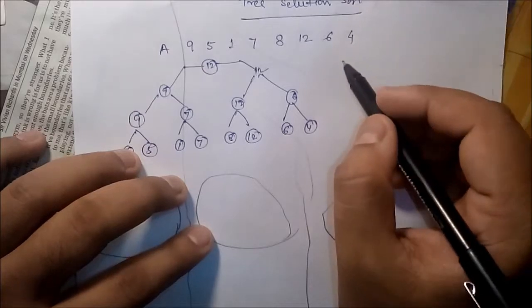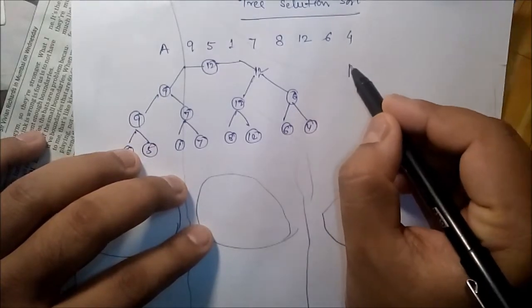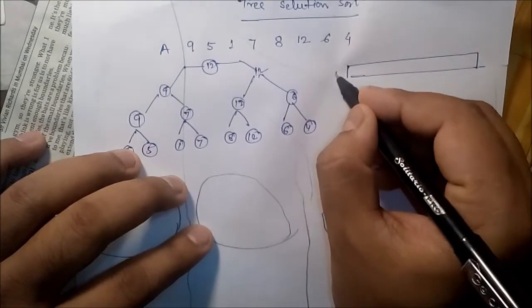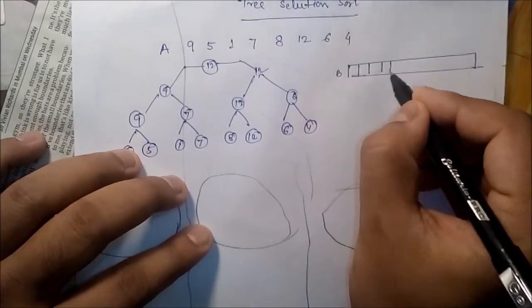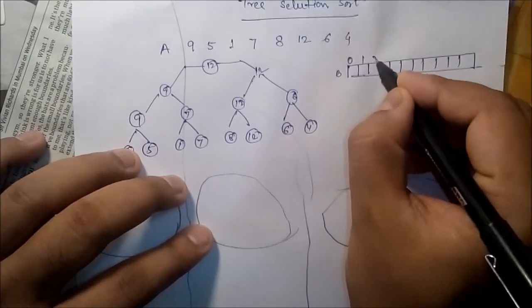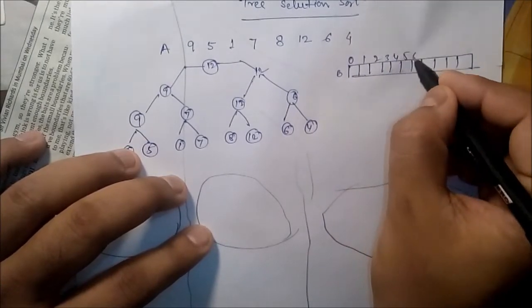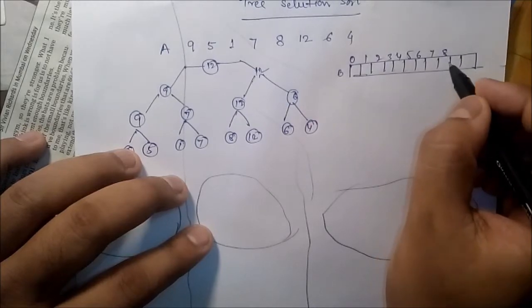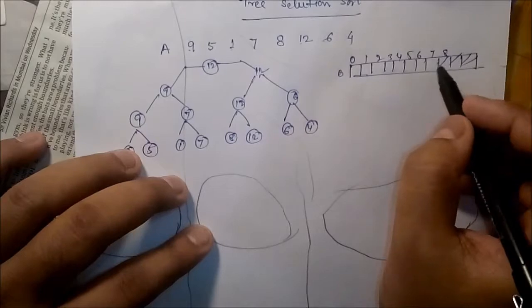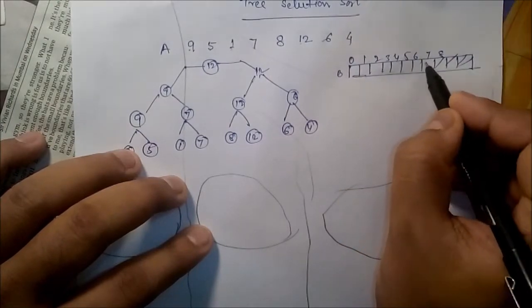Now, if the array is there, say B, so here we can store all the data. Say 0, 1, 2, 3, 4, 5, 6, 7, 8. So maximum 1 to 8 data, so 0 to 7. So here we can store 12.